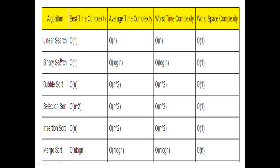Next, binary search: best time complexity is O(1), and the average time complexity and worst time complexity are O(log n).